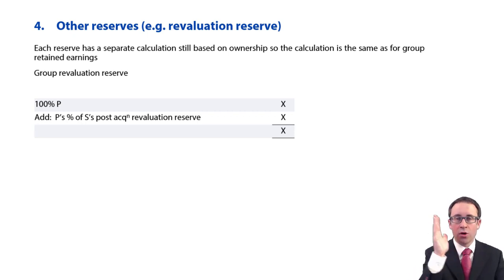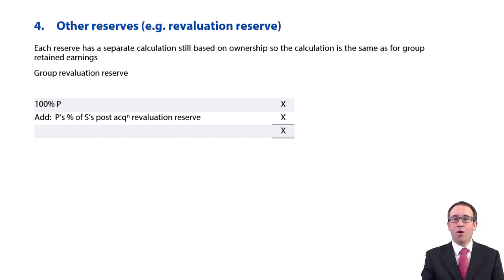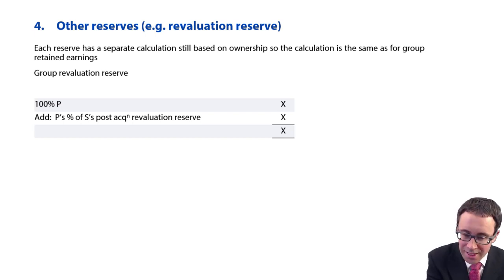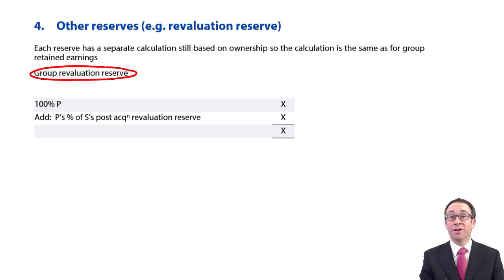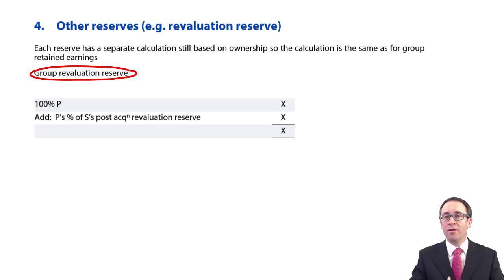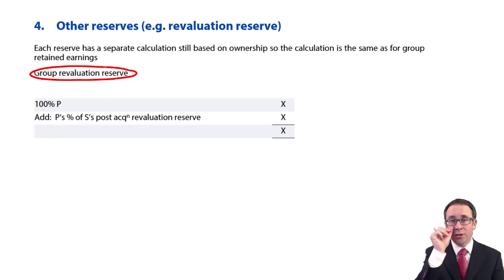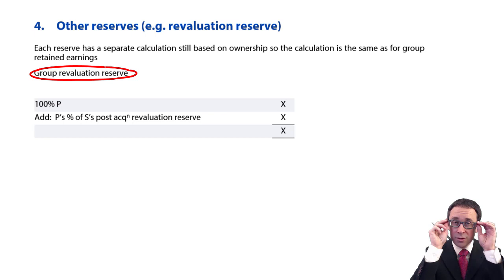There's another balance that could appear within equity, and that other balance you're potentially going to see would be a revaluation reserve. There may be one in the parent, there may be one in the subsidiary. How do we go through and treat that revaluation reserve?